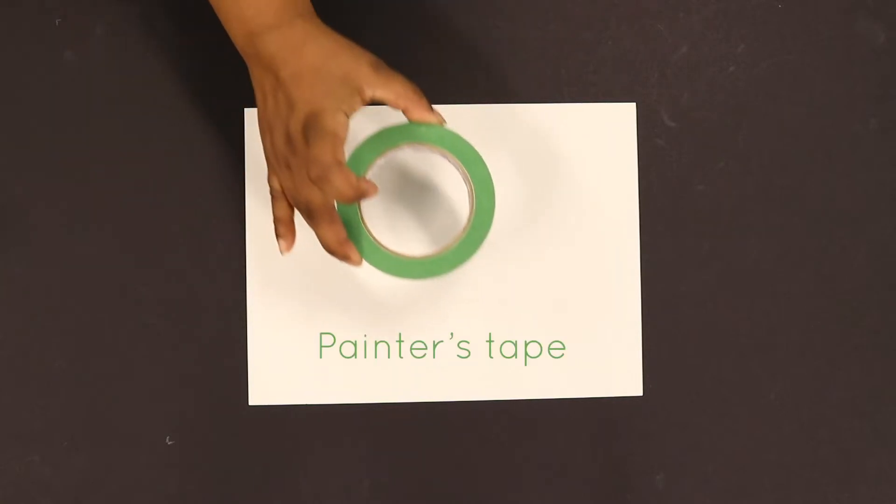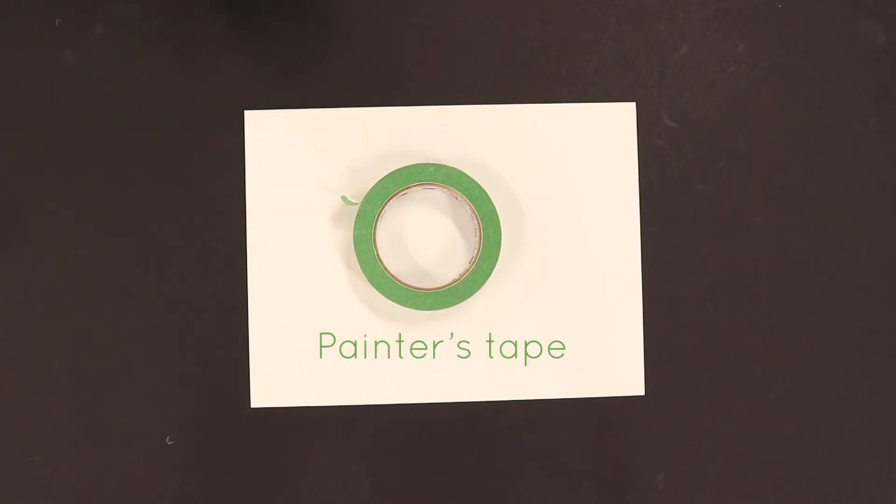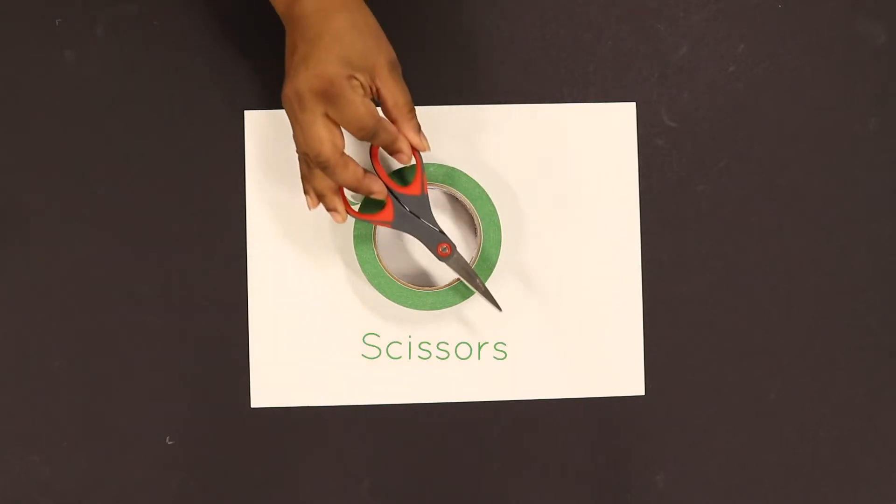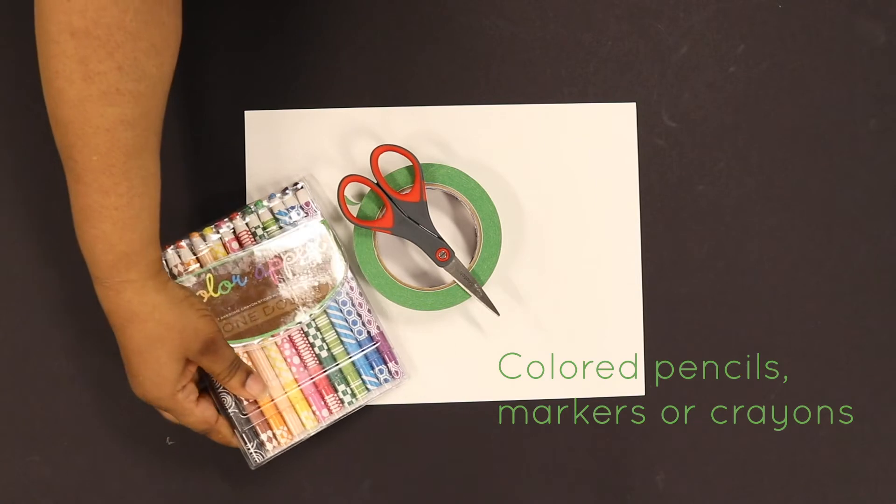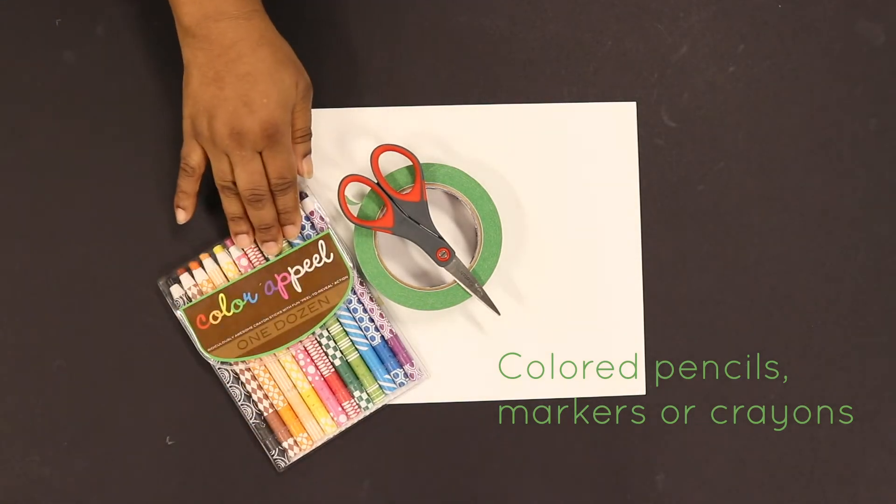We will also need painter's tape, which is easy to peel because it doesn't stick onto things. And we will need scissors and colored pencils, markers, or crayons.